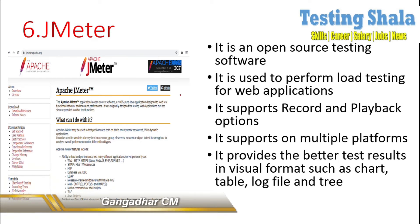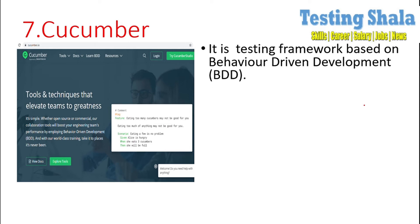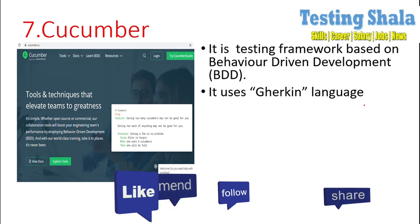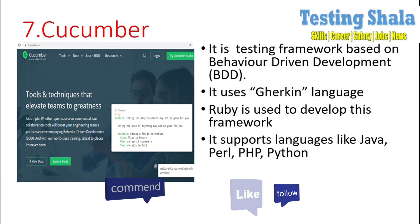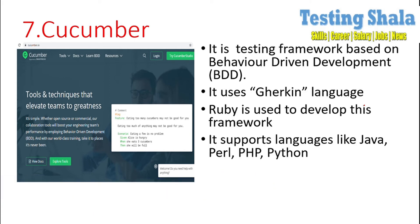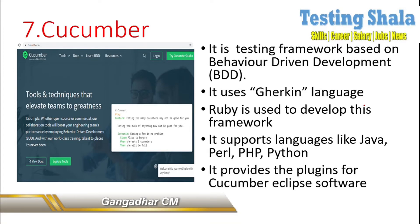The seventh is Cucumber. Cucumber is a testing framework based on Behavior-Driven Development — the BDD framework. It makes use of Gherkin language. This framework is developed using Ruby technology. Cucumber also supports various programming languages like Java, Perl, PHP, and Python. Cucumber also provides various plugins to support Eclipse software, which is used as an IDE where you can easily plug in Cucumber.